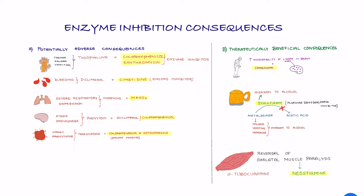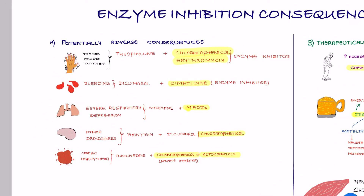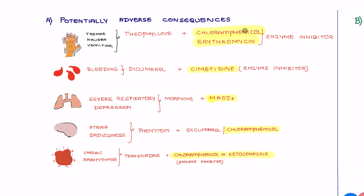Moving on to the consequences of enzyme inhibition — there are two consequences: enzyme inhibition can lead to potentially adverse consequences, or it can lead to therapeutically beneficial consequences. For potentially adverse consequences, when certain drugs are combined with enzyme inhibitors their concentration goes high, leading to toxicity. The first example: when you combine theophylline with chloramphenicol and erythromycin — these are enzyme inhibitors which increase theophylline concentration, producing side effects such as tremors, nausea, and vomiting.